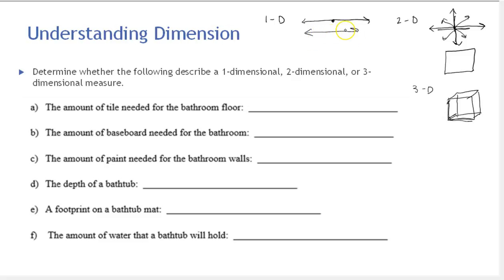In general, we measure something one-dimensional with something else that's one-dimensional, like a line. Two-dimensional objects we measure with squares typically, and three-dimensional objects we measure by imagining filling them with cubes. Now let's read these questions.